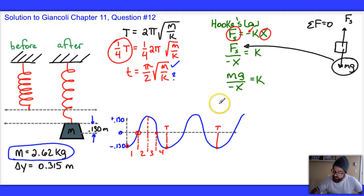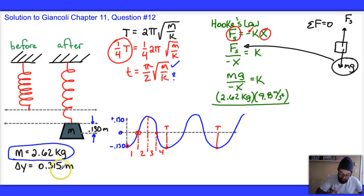And then, finally, I'm going to go ahead and plug some numbers in. That becomes 2.62 kilograms. I'm going to multiply by the acceleration due to gravity, 9.8 meters per second per second. And then, I'm going to divide that by the negative displacement. Well, the displacement is 0.315. It's this displacement that I'm moving, and it's in the negative direction.